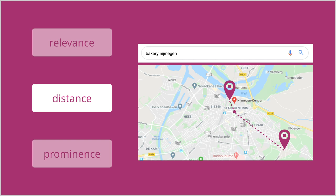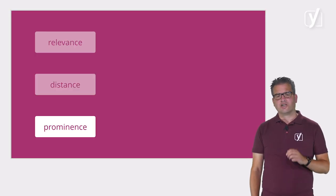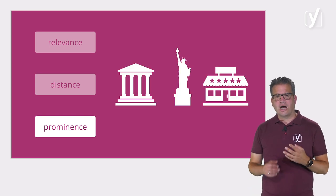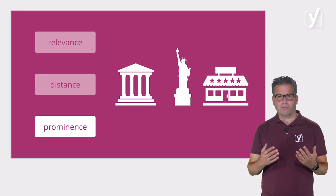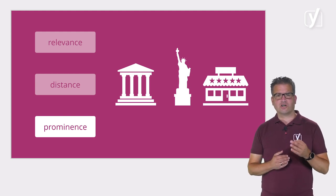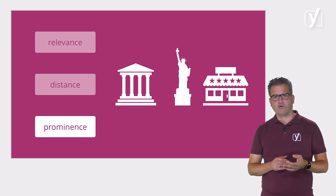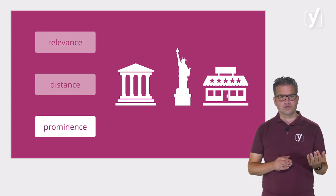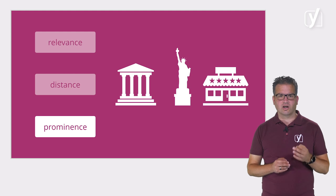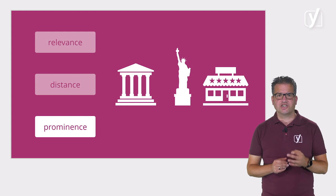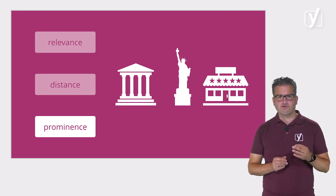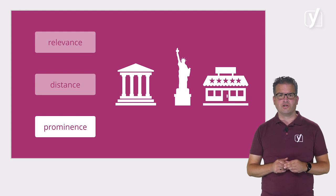So proximity to the center is actually important here too. The third factor is prominence. Prominence refers to how well known a business is. Some places are more prominent in the offline world and Google tries to reflect this in local ranking. For example, famous museums, landmarks, or stores that are familiar to many people are likely to be prominent in local search results. But prominence is also based on your site's online reputation — if your site has a lot of positive reviews and ratings, that will improve your local ranking.